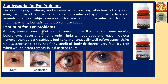Psorinum for eye problems: gummy, everted eyelids, entropion — where the eyelid and hairs have turned inward. Sensation as if something is moving before the eyes. Recurrent chronic ophthalmia without apparent reason. Objects tremble then go dark. The USP (uncommon strange peculiar symptom): subject feels hungry or unusually well before an attack. Subject is chilly and depressed; all body discharges are foul. This remedy is used when a well-selected remedy fails and the patient is chilly.